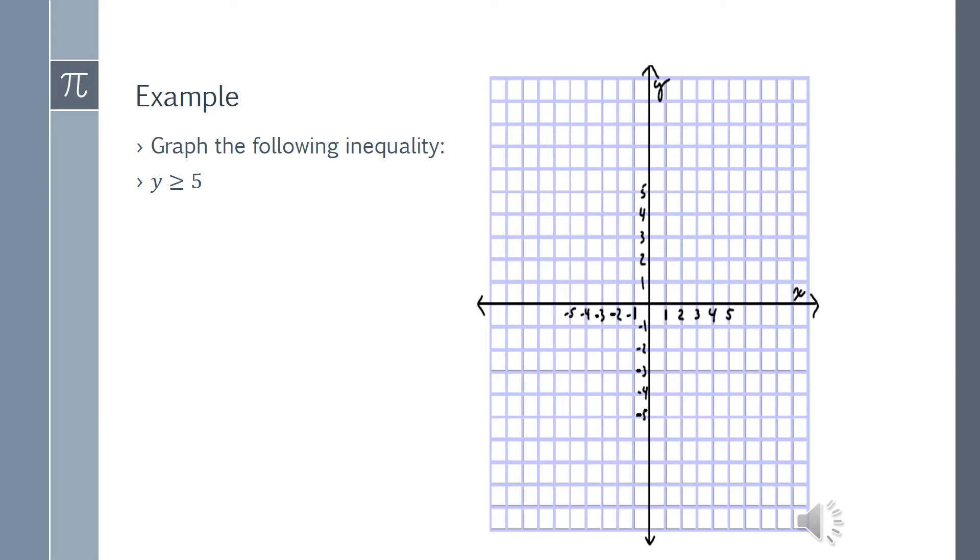So the first thing to notice is that this is a special case line. y equals 5 is a horizontal line at 5. This is going to be a solid line because of the bar underneath the inequality sign. Now, since it's greater than or equal to, I'm going to shade above the line or up. Like so.